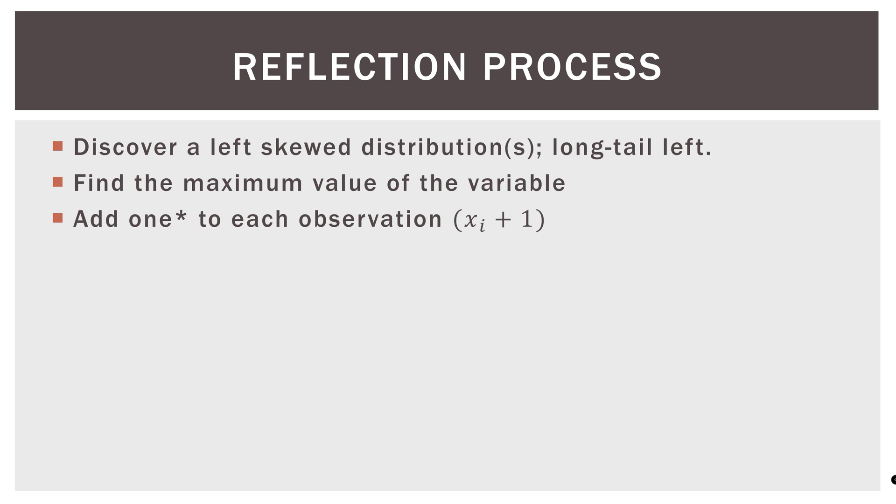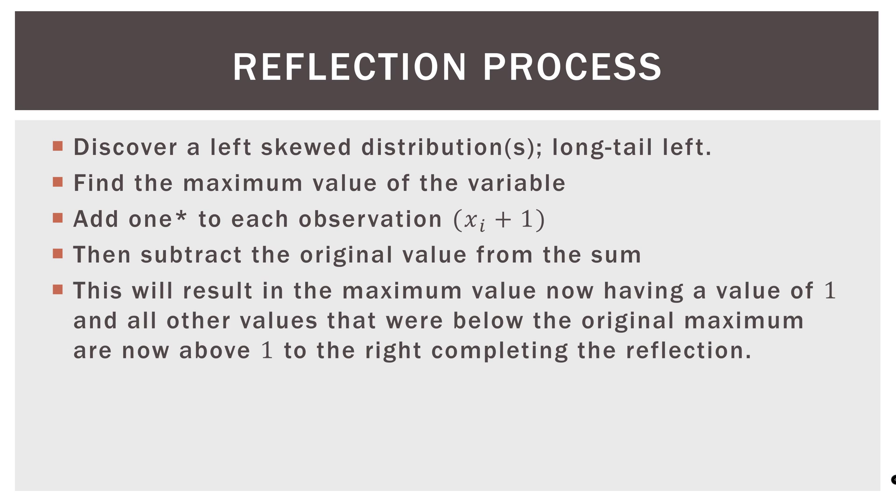Then we subtract the original value from that sum. So in that previous example I just stated, if the maximum value is now five, then we subtract the original value of four. And now we have a value of one for that observation. This will result in the maximum value now having a value of one and all other values that were below the original maximum are now above one to the right, completing the reflection.